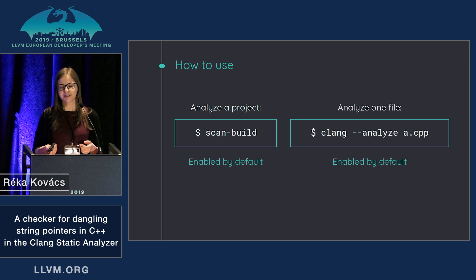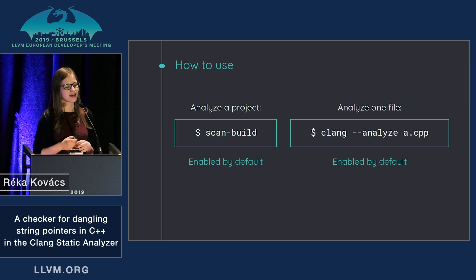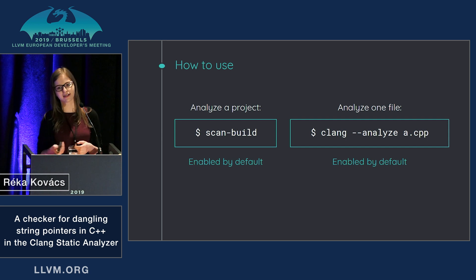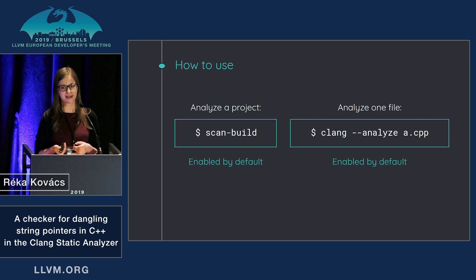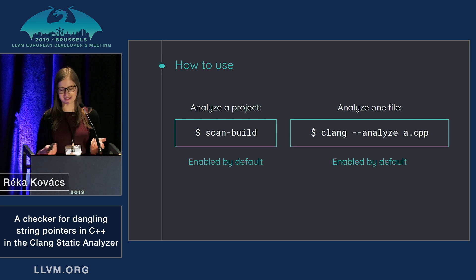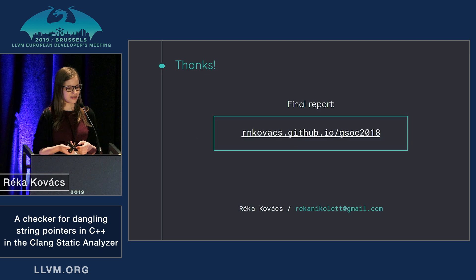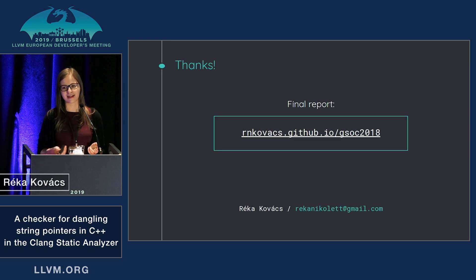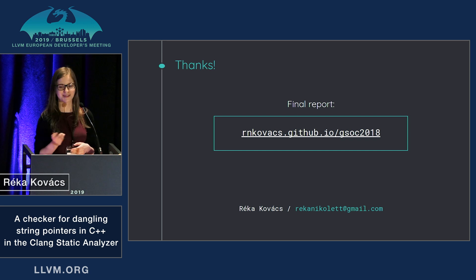You can use the checker easily. If you just analyze your project with scan-build, you don't have to do anything else, because the checker is enabled by default. Also, if you analyze one file with clang --analyze, you also don't have to do anything else, because it's enabled by default. If you'd like to find out more about this, the link to my final report is on the slide.